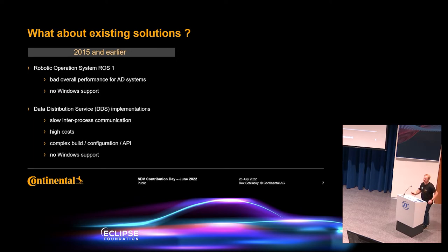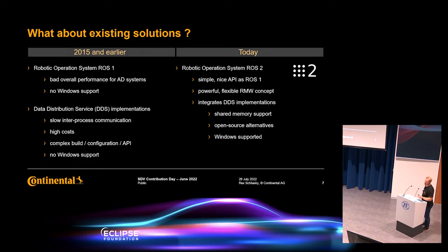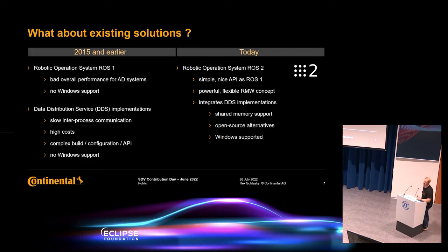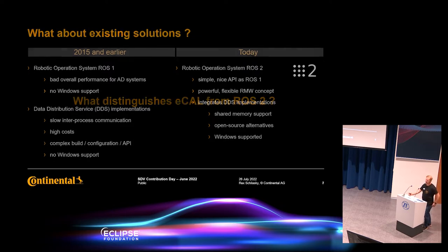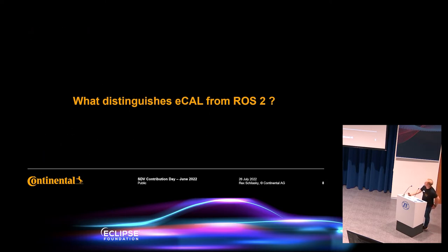But what is the situation today? Today, the Robot Operating System ROS2 exists. It has the same simple, nice API as ROS1, but in addition it has a very powerful so-called ROS middleware concept — meaning it can integrate other communication stacks as the communication backbone. With ROS2 we have the possibility to integrate a DDS system, and we can also benefit from shared memory transport. There are open source alternatives and Windows is supported as well. So the question is: what distinguishes eCal from ROS2 today?